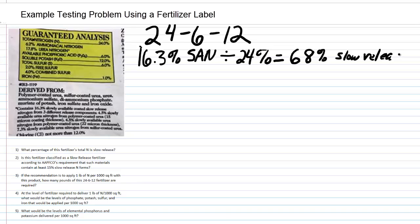This product is definitely a slow release material — 68% is much greater than 15%. Question three: if the recommendation is to apply one pound of nitrogen per 1,000 square feet with this product, how many pounds of this 24-6-12 fertilizer are required?